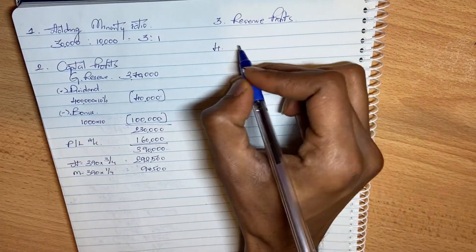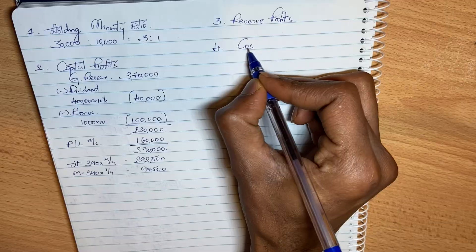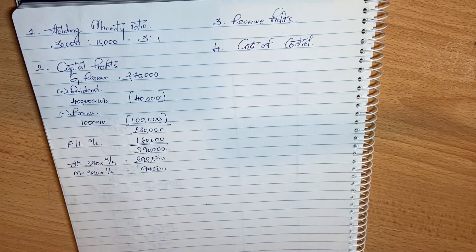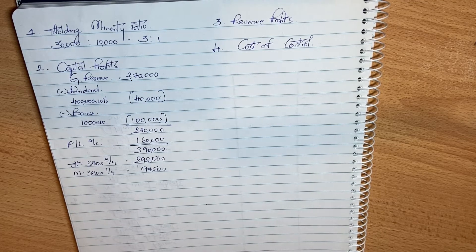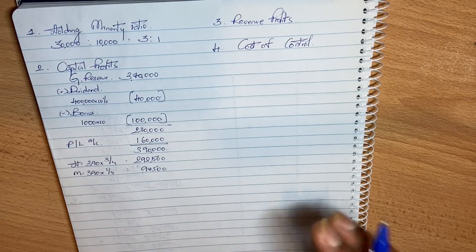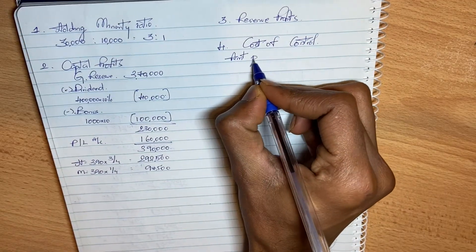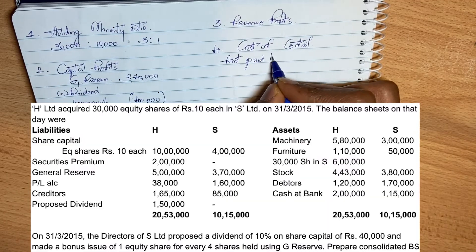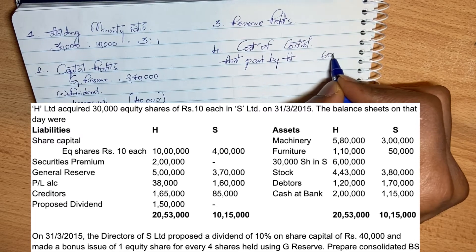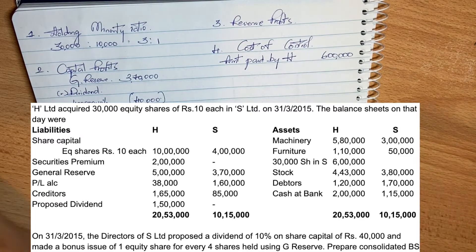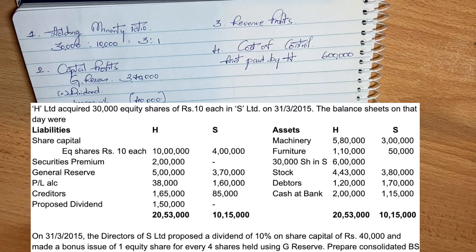Fourth step is calculation of cost of control or goodwill. The holding company paid an amount for acquiring shares. The difference between the amount paid and the value of shares acquired gives goodwill. The amount paid by the holding company is Rs. 6,00,000, which is the investment in S — 30,000 shares in S.